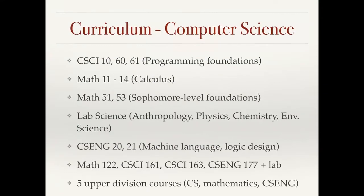Our curriculum in computer science includes a first-year sequence taught in C++. It begins with an introduction to C++, object-oriented programming, and data structures. We have four quarters of calculus and then a couple of sophomore-level courses, one in discrete mathematics and one in linear algebra. Our students take a lab science in anthropology, physics, chemistry, or environmental science. They take a couple of classes in the computer science and engineering department: machine language and logic design, and then some upper division classes.